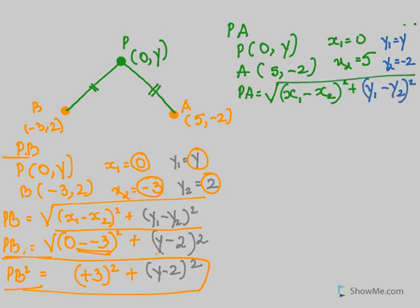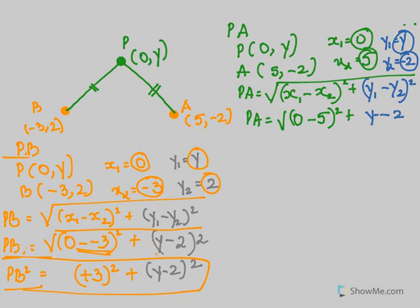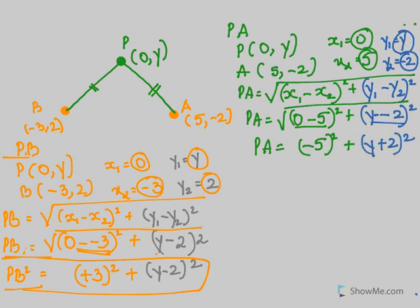So PA = √[(0-5)² + (y-(-2))²] = √[(-5)² + (y+2)²]. Squaring both sides: PA² = 25 + (y+2)².